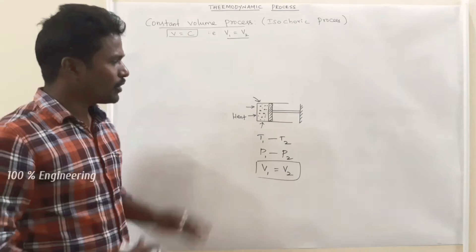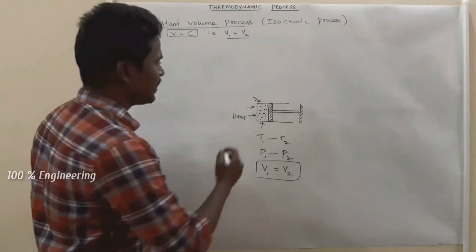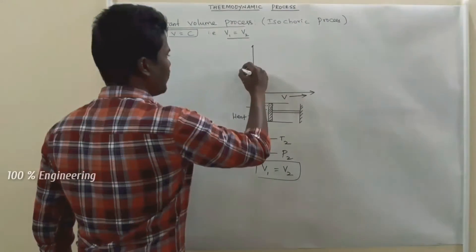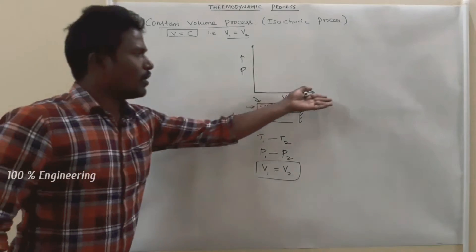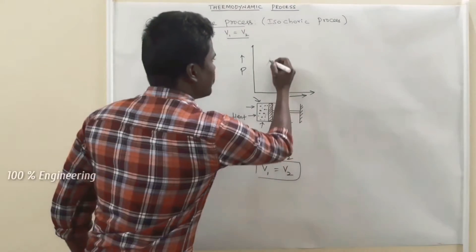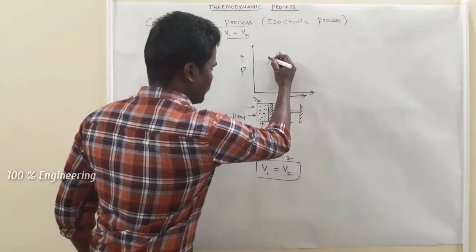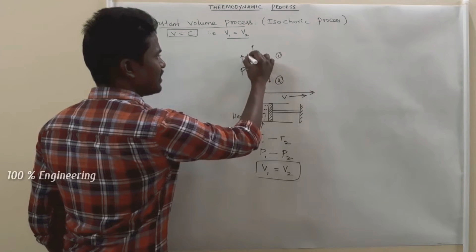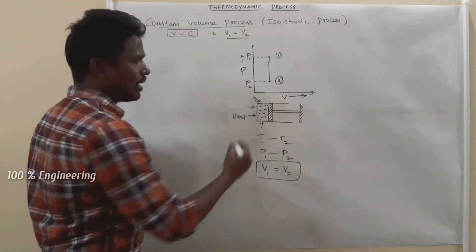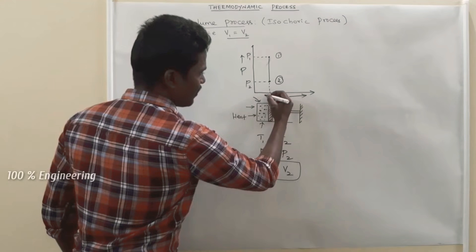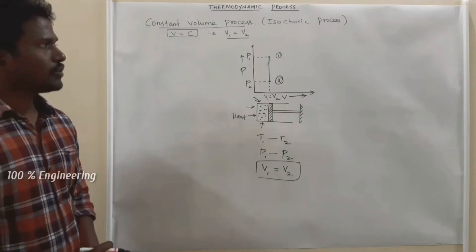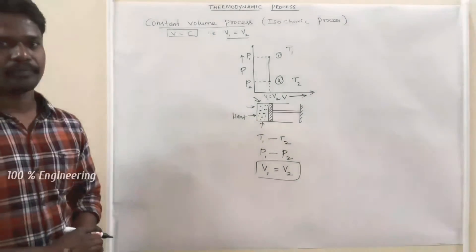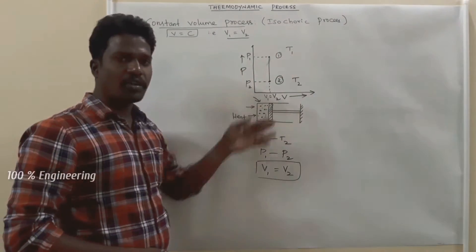Volume is taken in the x-direction and pressure is taken in the y-direction. This is the initial state 1 and this is the final state 2. The pressure at the initial state is P1 and the pressure at the final state is P2. The volume at the initial and final states are equal: V1 equal to V2. This is the PV diagram for the given constant volume process.